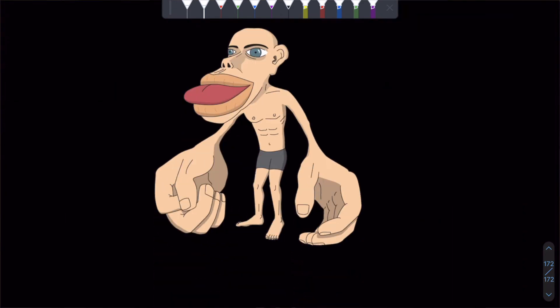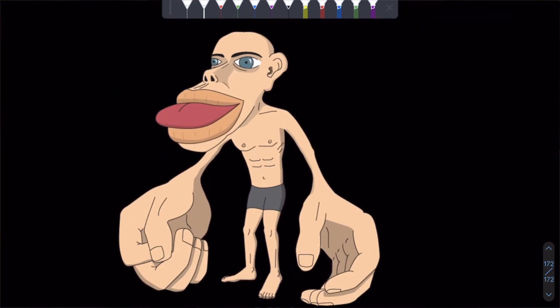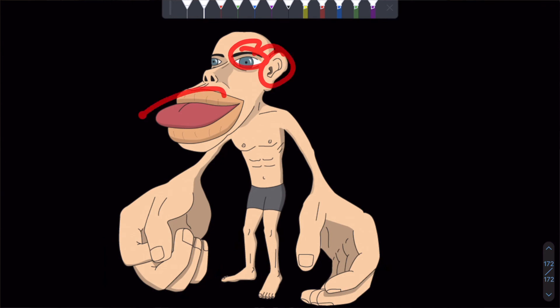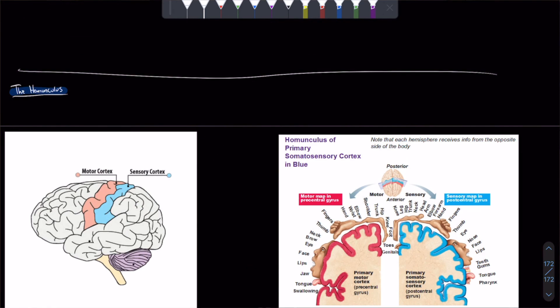So you can tell that our sensory organs are like our hands where we feel things. Our eyes, our ears, our tongue and our mouth - those are all huge. And this is why they are represented just like in this picture.